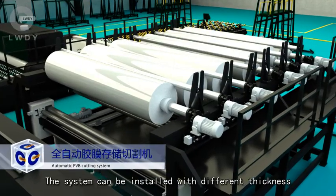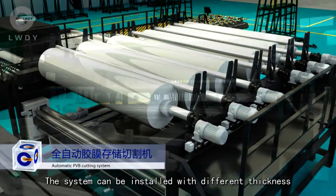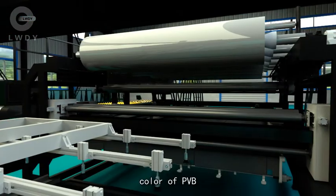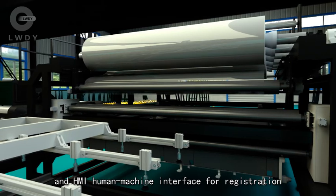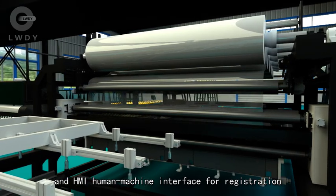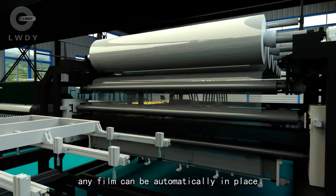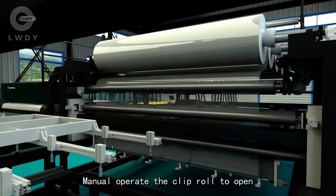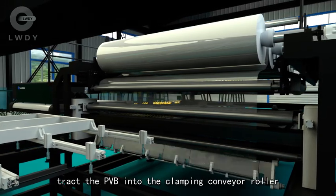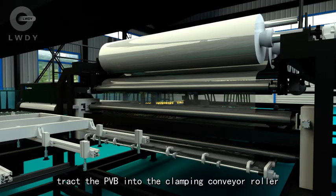The system can be installed with different thicknesses with color of PVB and HMI human machine interface for registration. Any film can be automatically in place. Manual operation of the clip rail to open, track the PVB into the clamping conveyor roller.